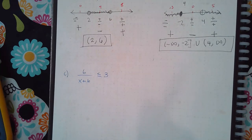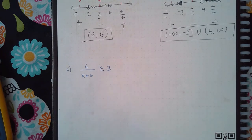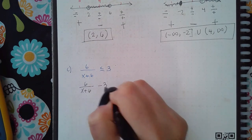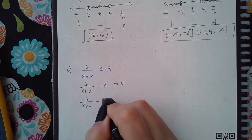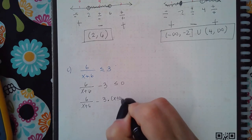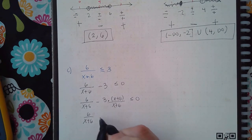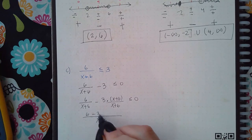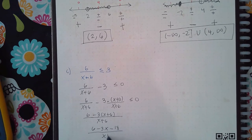This third example is different — it requires manipulation. The right-hand side must equal zero before setting numerator and denominator to zero. I rewrite it as six over x plus six minus three less than or equal to zero, then find a common denominator. I subtract three times (x plus six) over (x plus six), combining into one fraction: six minus three x minus 18 over x plus six.